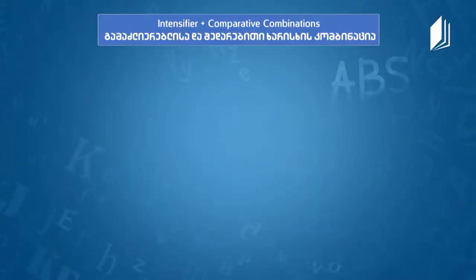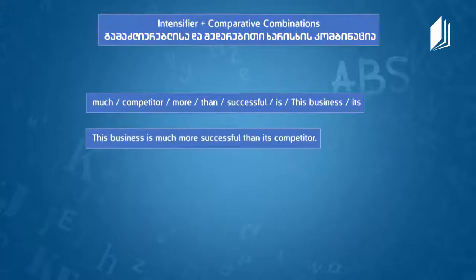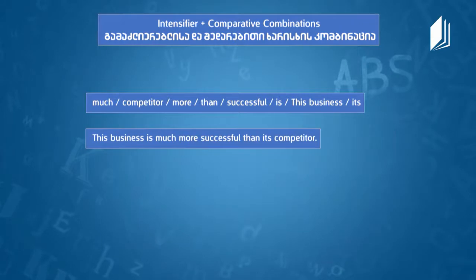Here's the first example. The words are: much, competitor, more, than, successful, is, this business, its. I'll start with 'this business' — I know I'm comparing this business to its competitors. The sentence is: 'This business is much more successful than its competitor.' One is much more successful than the other — so we've used the intensifier 'much.'